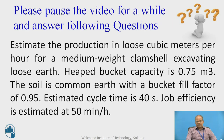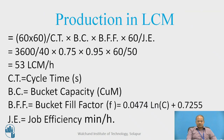Please pause the video for a while and answer the following question. Estimate the production in loose cubic meters per hour for a medium weight clamshell excavating loose earth. Heaped bucket capacity is 0.75 cubic meters, the soil is common earth with a bucket fill factor of 0.95, estimated cycle time is 40 seconds, and job efficiency is estimated as 50 minutes per hour. By substituting these values in the equation we get 53 loose cubic meters per hour as the production answer.